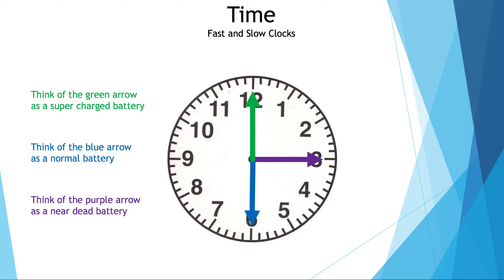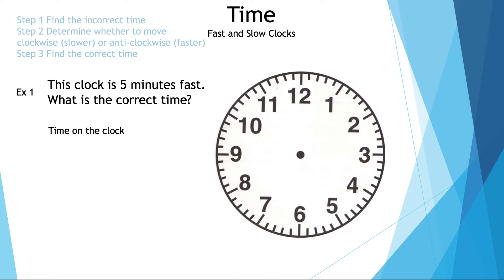That was a visual representation. Now let's talk about the math behind it. Step one: find the incorrect time. Step two: determine whether to move clockwise or anti-clockwise. Step three: find the correct time.